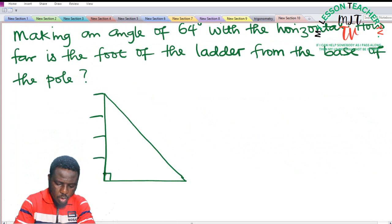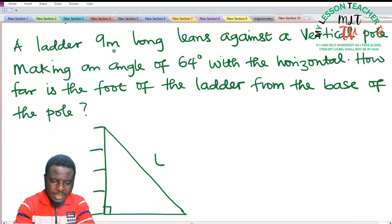If this is my wall and this is the ladder, let's call it L. A ladder 9 meters long—it therefore means that L is 9 meters—leans against a vertical pole.